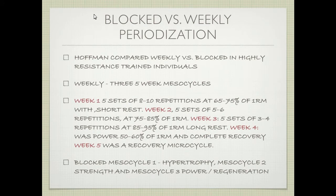There's a study by Hoffman that I really want to analyze. Hoffman compared weekly versus blocked in highly resistant trained individuals. The weekly protocol was three five-week mesocycles. Week one: five sets of eight to ten repetitions at 65–75% RM, short rest. Week two: five sets of five to six repetitions at 75–85% RM. Week three: five sets of three to four repetitions at 85–95% RM, long rest. Week four was power at 50–60% of 1RM with complete recovery. Week five was a taper.